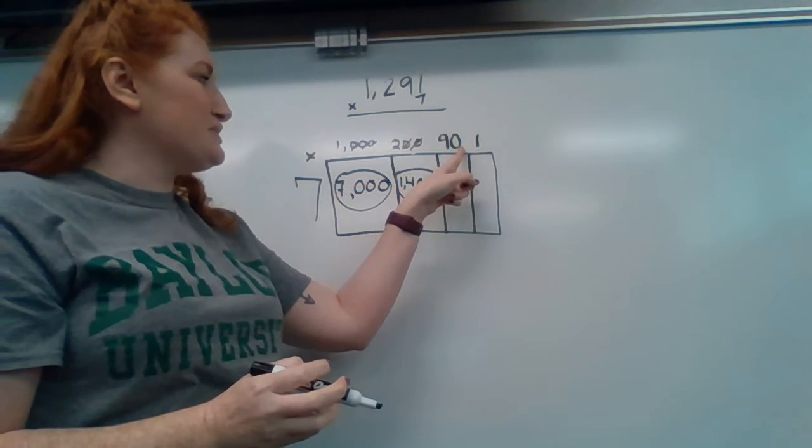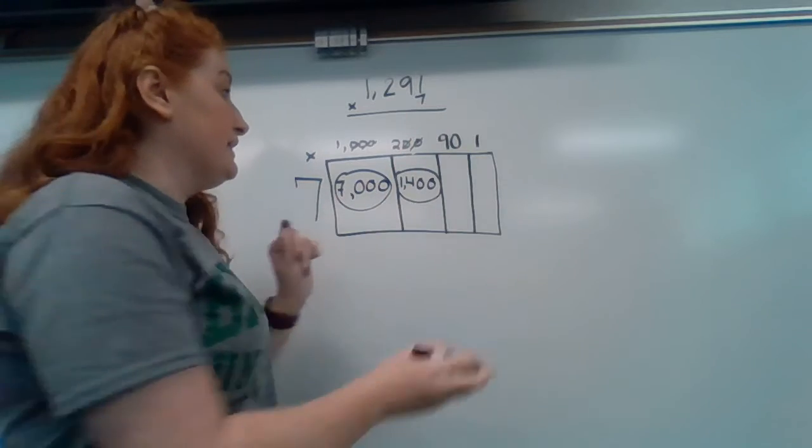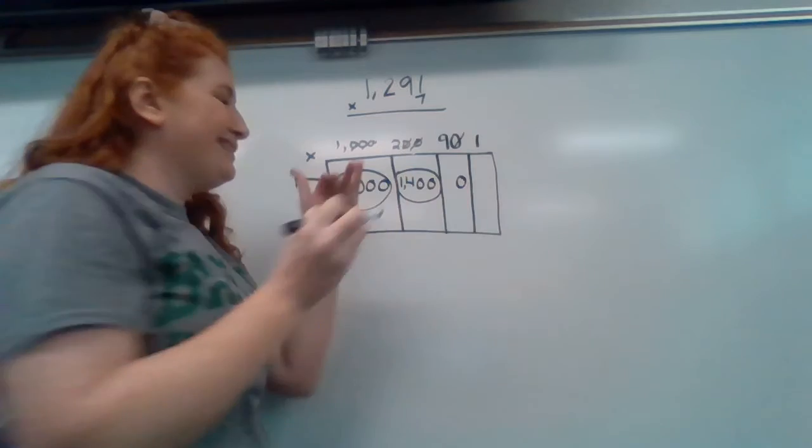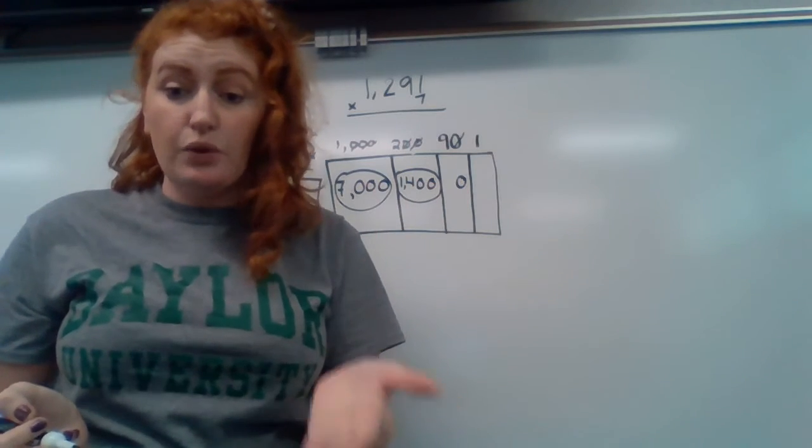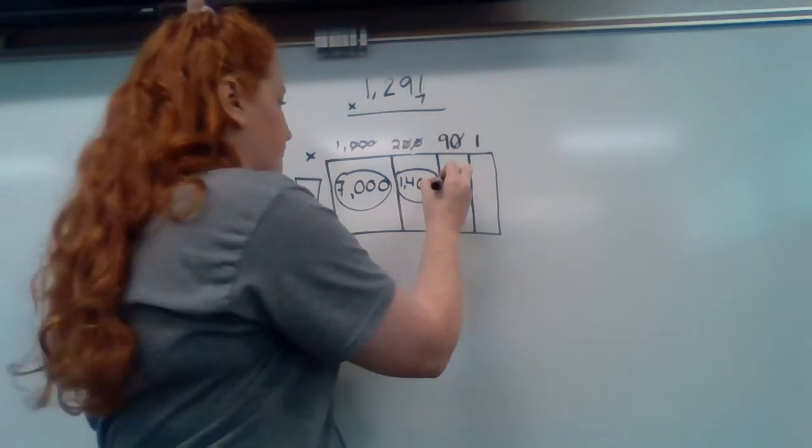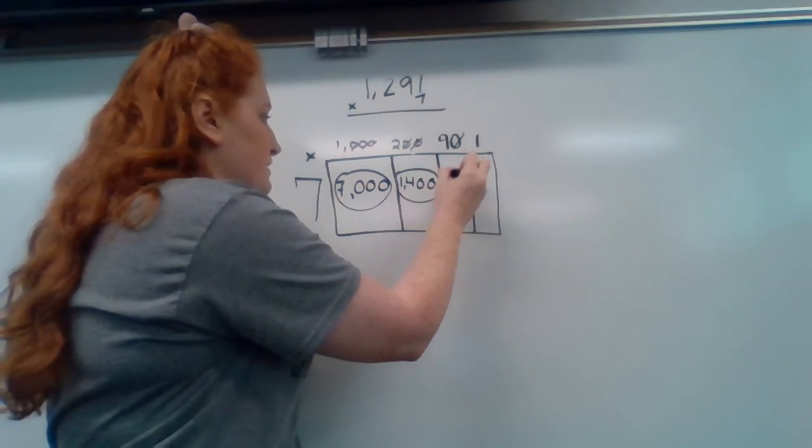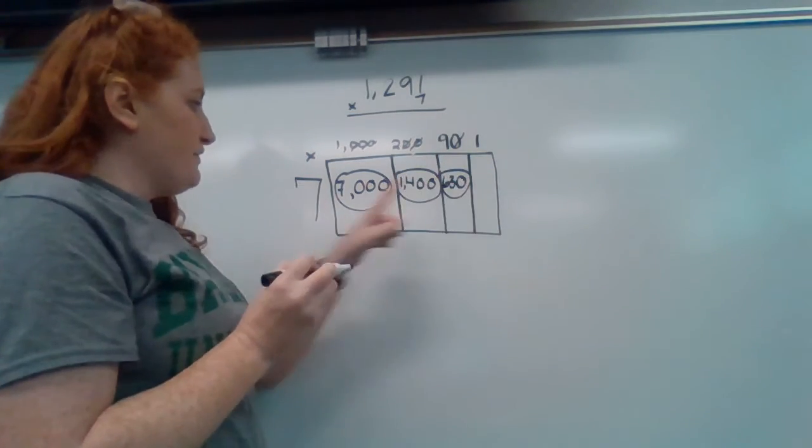Now I'm going to move to the tens place. There's a 90. So again, one zero. And then I cross it off. And then nine times seven, we know is 63. And I'm done with that one. 90 times seven, 630.